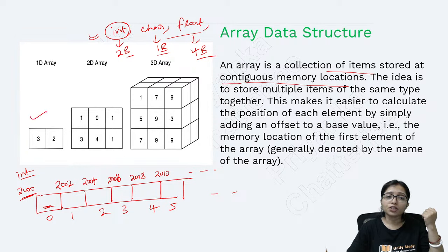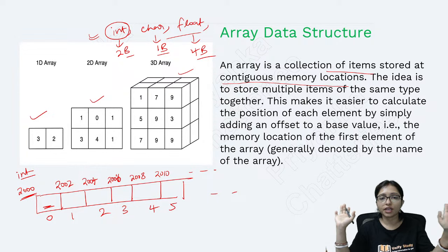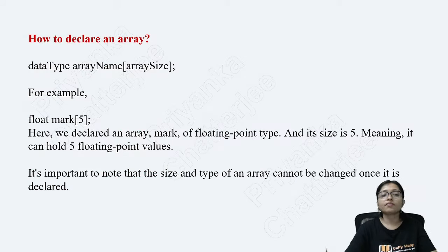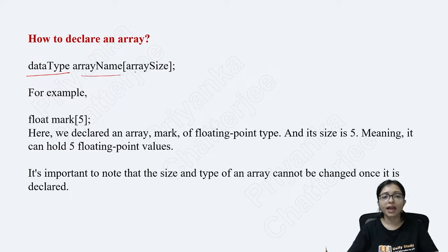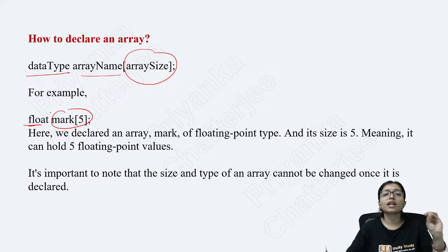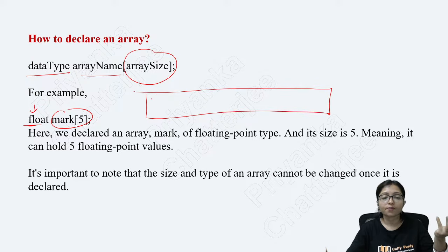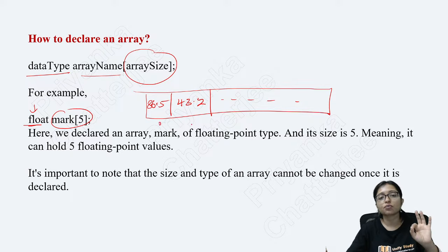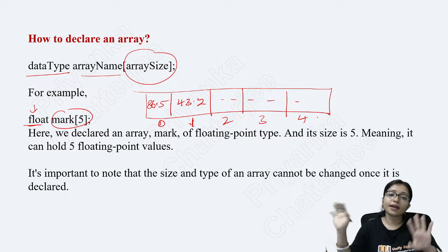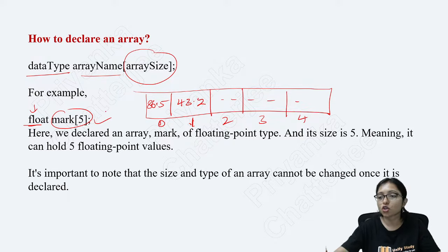There is one-dimensional, two-dimensional, three-dimensional array. When declaring an array, the format is: data type, array name, array size. For example, `float marks[5]` means I want to store 5 floating-point values like 86.5, 43.2, etc., at index locations 0, 1, 2, 3, 4.